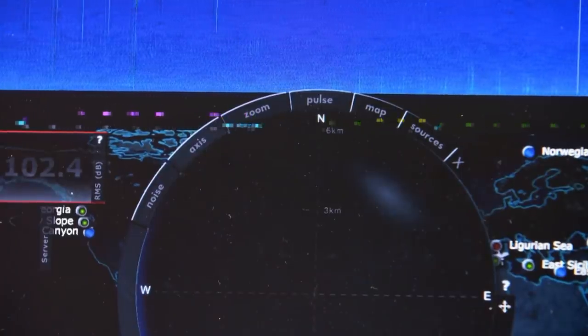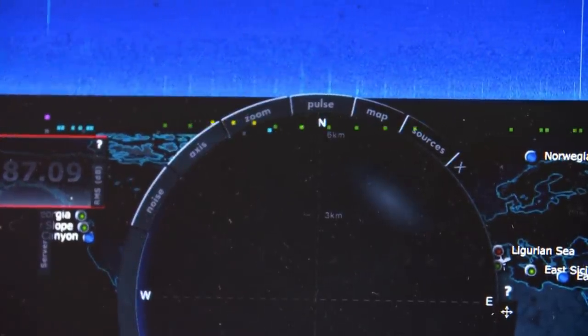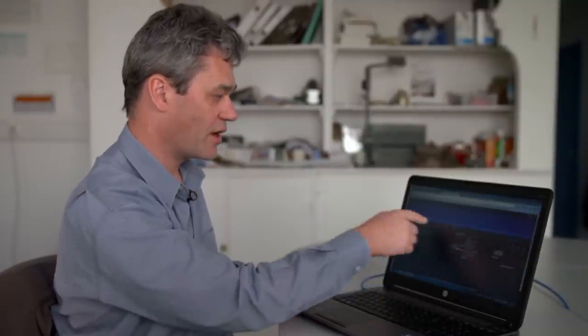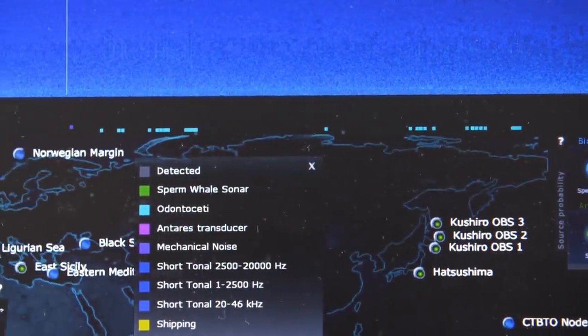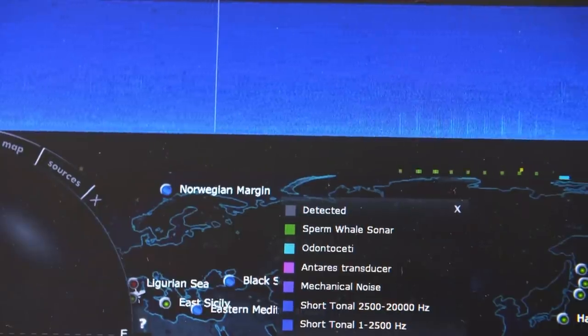KM3NET will be a multi-functional measuring instrument in the sea, supplying biologists, geologists, and physicists with data. Apart from neutrinos, the scientists can already detect specific species of whales and dolphins in the Mediterranean. Each time a signal is detected, I see a color code and hear a click, so I can hear short broadband signals - clicks in real time - a few milliseconds after the dolphins or whales, especially toothed whales and sperm whales, transmit them.